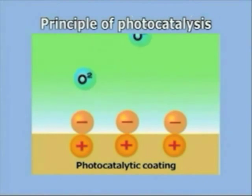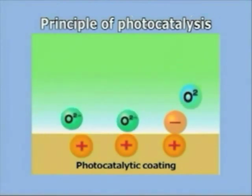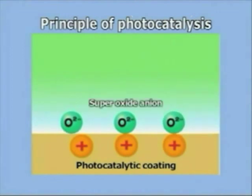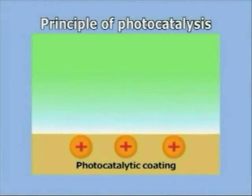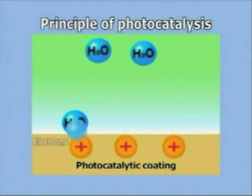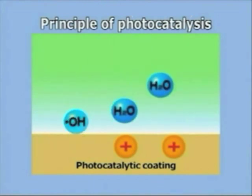The released electrons bind with oxygen to become superoxide anion. Moreover, the surface of the titanium dioxide becomes positively charged and takes electrons from moisture in the air. The moisture that has lost electrons becomes hydroxyl radical.